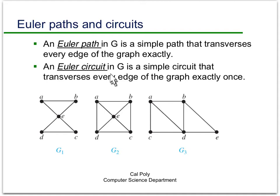Or we could have something stronger—an Euler circuit, which is a circuit that traverses every edge of the graph exactly once. It would start and stop at the same vertex. Look at these three graphs and try to figure out whether they have Euler paths or Euler circuits, or neither.